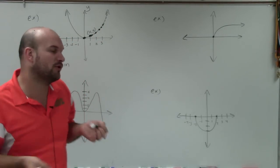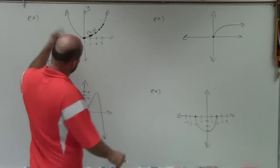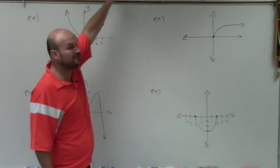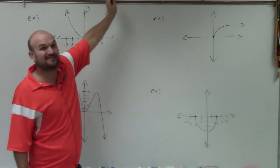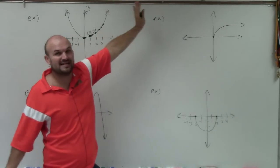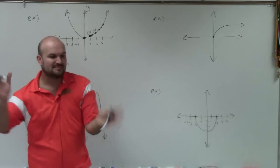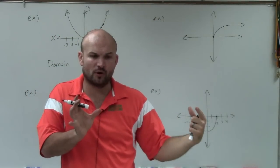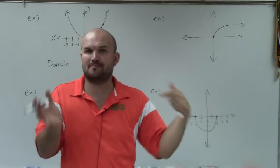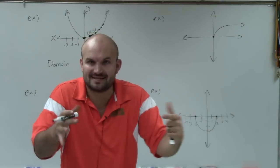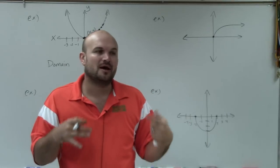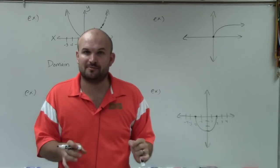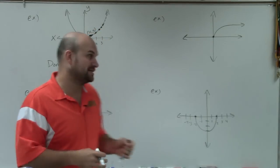The other thing that's really important when looking at a graph to determine domain and range is the arrows. What an arrow tells you is that the graph is going to continue going up and to the right. A lot of times when looking at a graph, the best thing to do is ask what is NOT in the domain and what is NOT in the range.